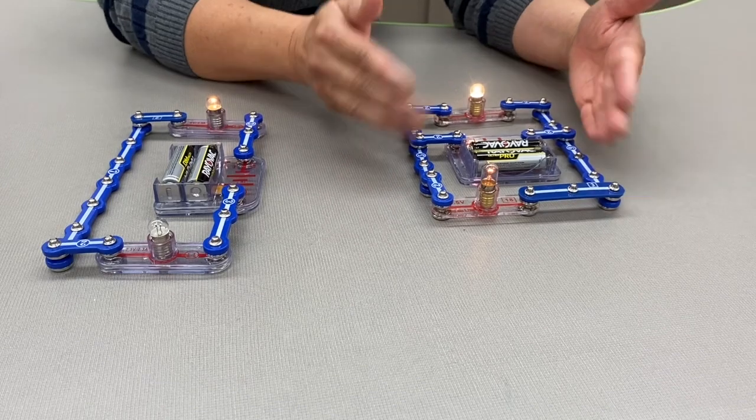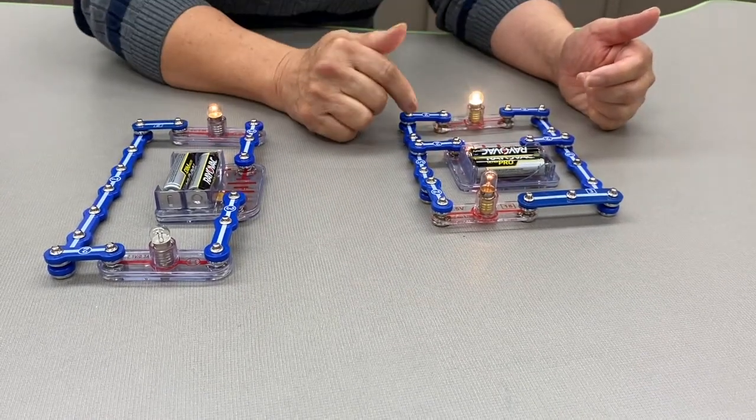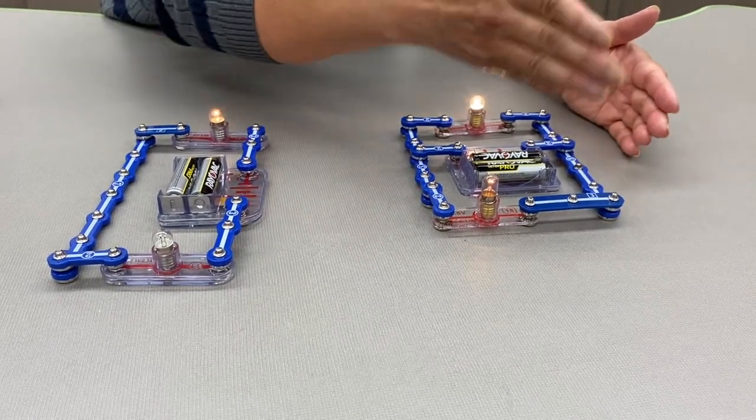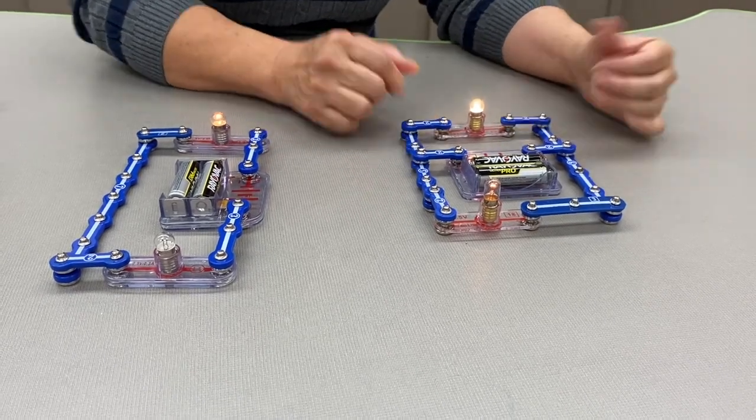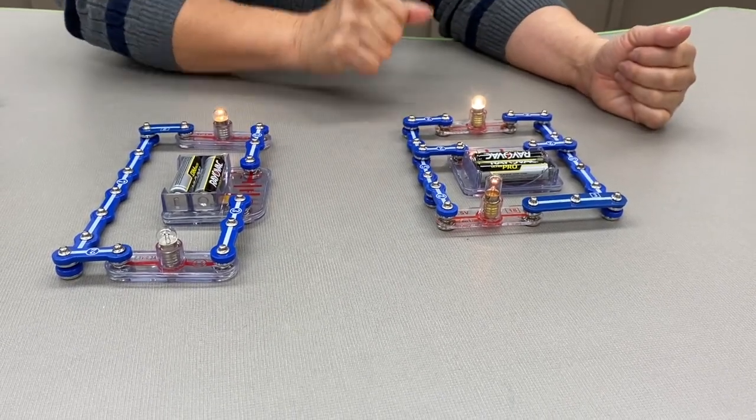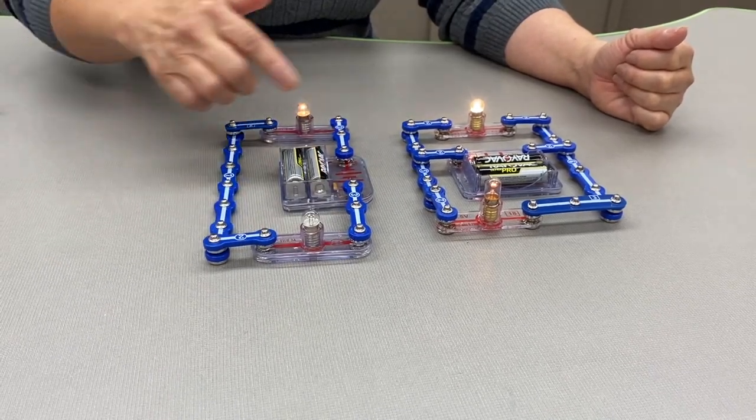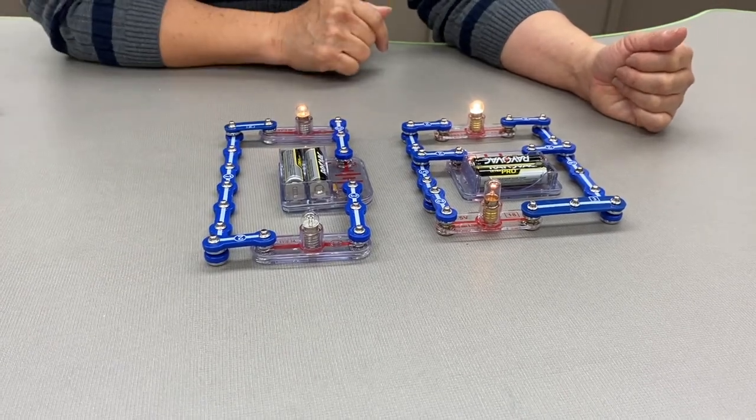which is kind of like the current. Since more toll booths are open, the current has a choice to go in a different toll booth and therefore more electricity can go around the circuit. And that's why two light bulbs can be lit. Whereas in a series circuit, only one light bulb gets lit.